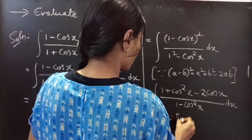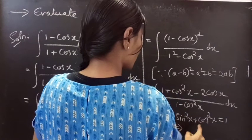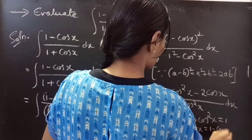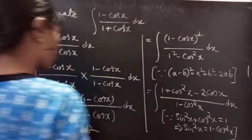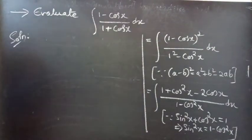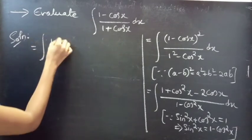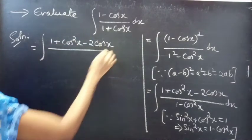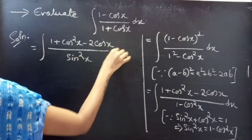Since we know that sin squared x plus cos squared x equals 1, taking cos squared x to the right-hand side gives sin squared x equals 1 minus cos squared x. So we can replace the denominator 1 minus cos squared x by sin squared x.